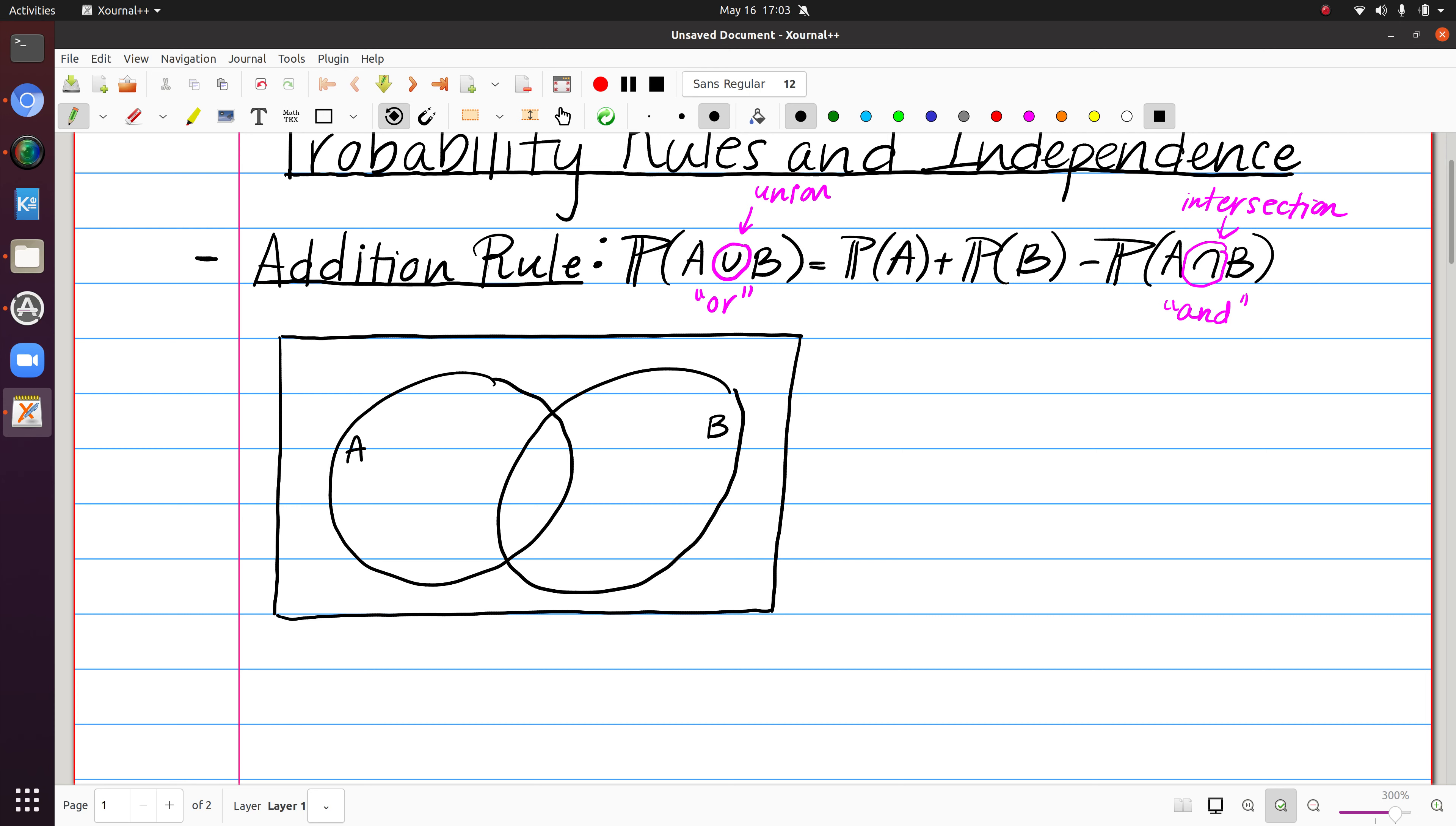When we talk about the probability of A or B, to be clear, what that represents in this visual here would be anything that sits inside of either circle. So what's happening here is this is saying that we're going to take everything in A, that's here, and we're going to add to it everything in B.